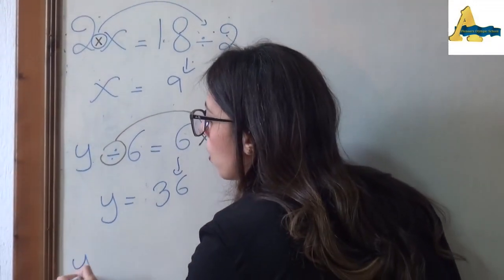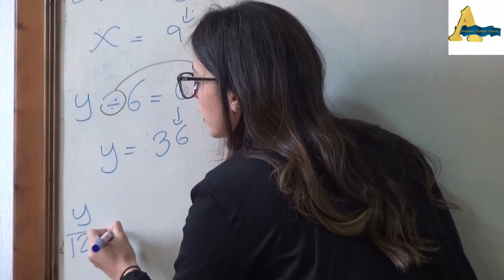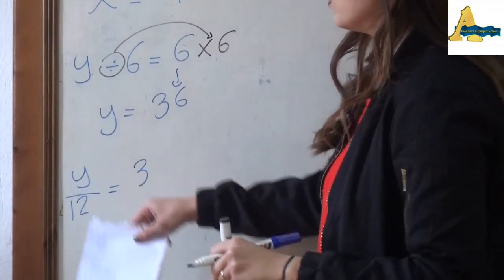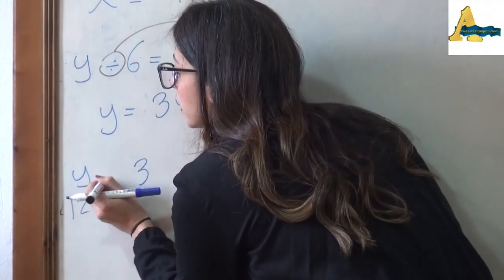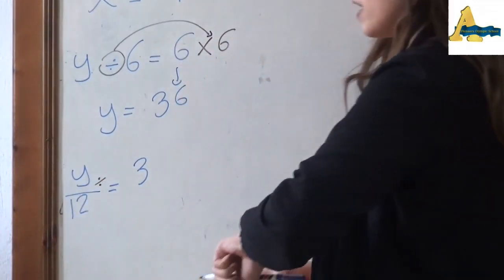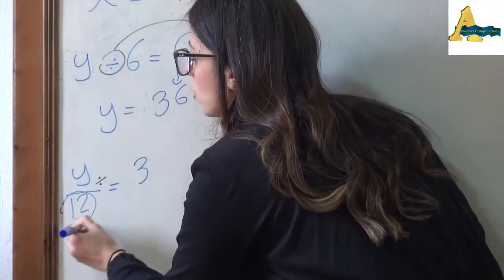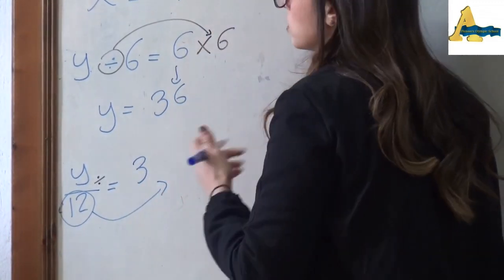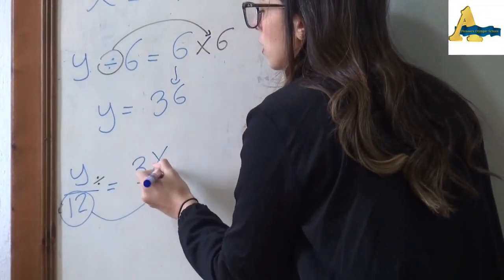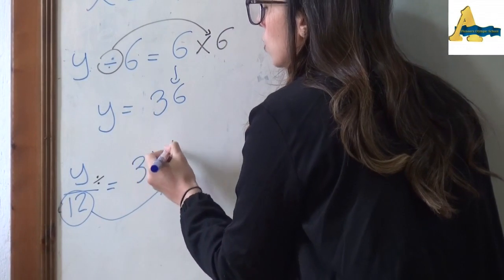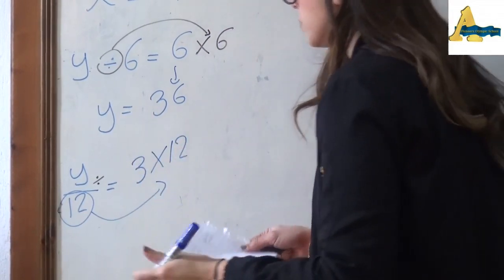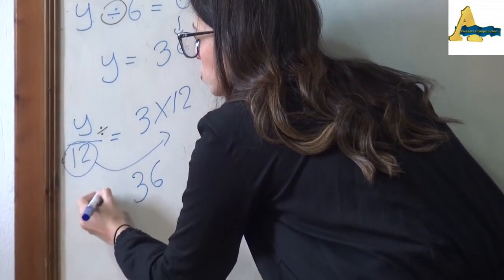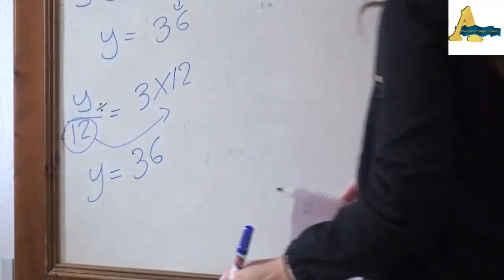If I have y/12 = 3: y over 12 means y divided by 12. As we said, divided is going to go to the other side as times. So y equals 3 times 12 = 36, that means y = 36.